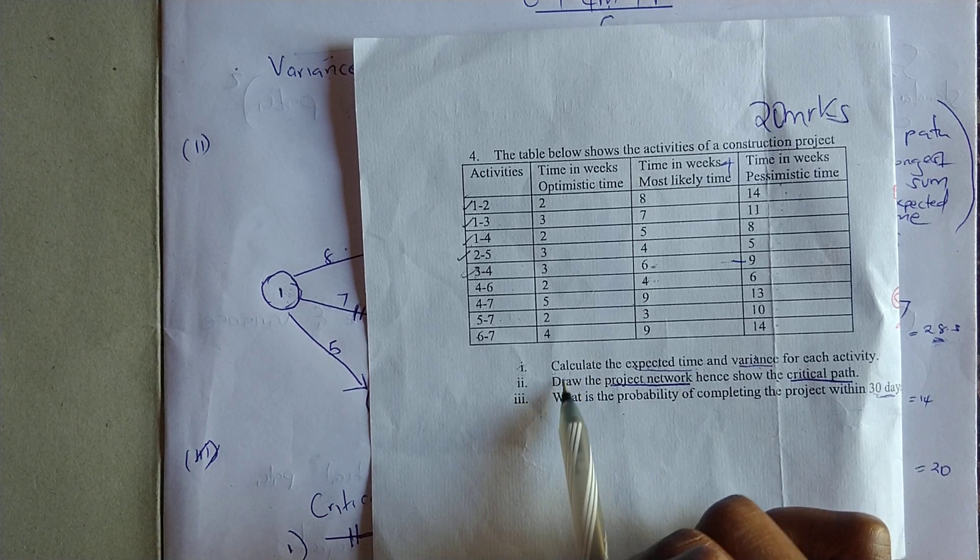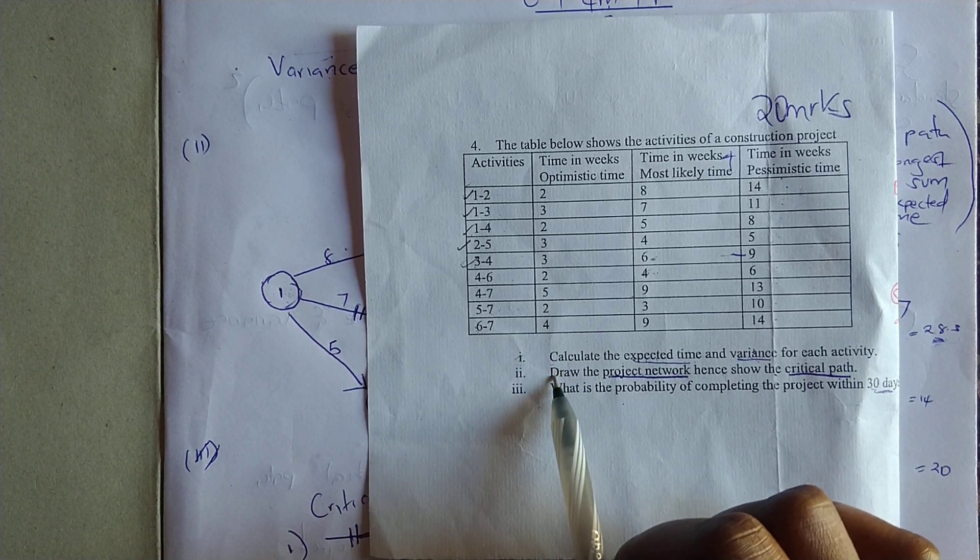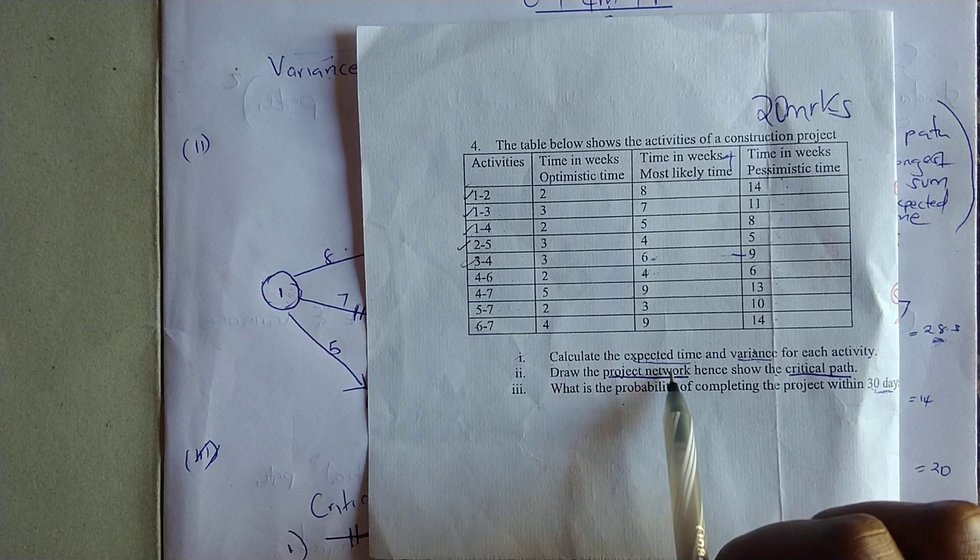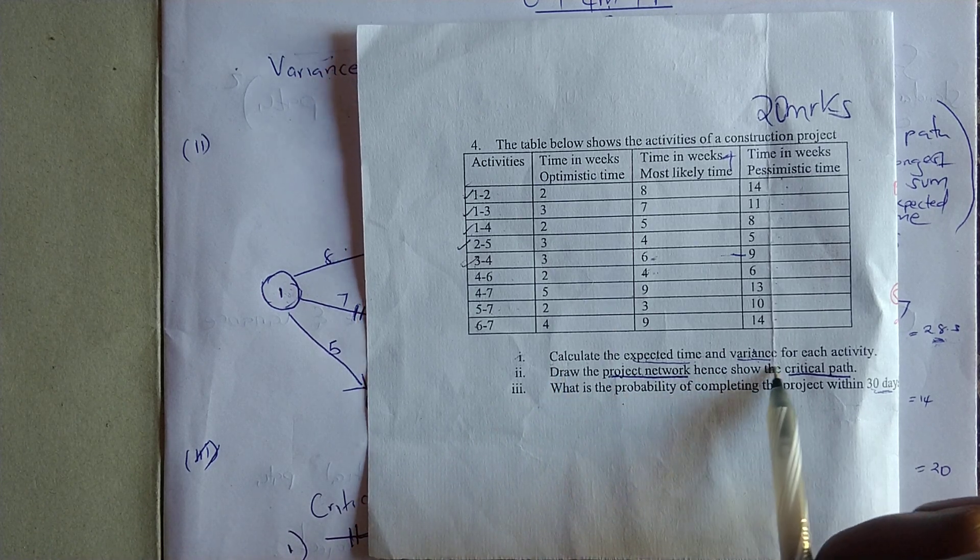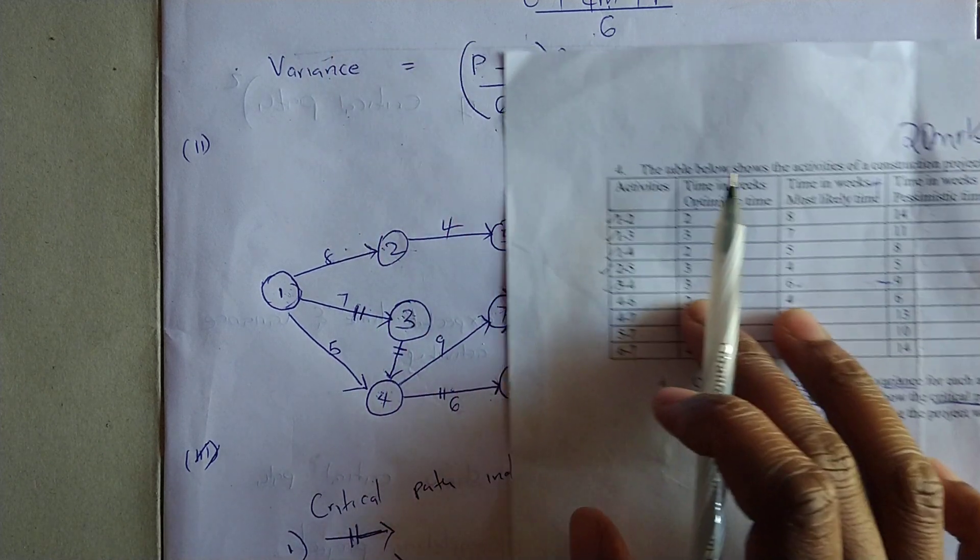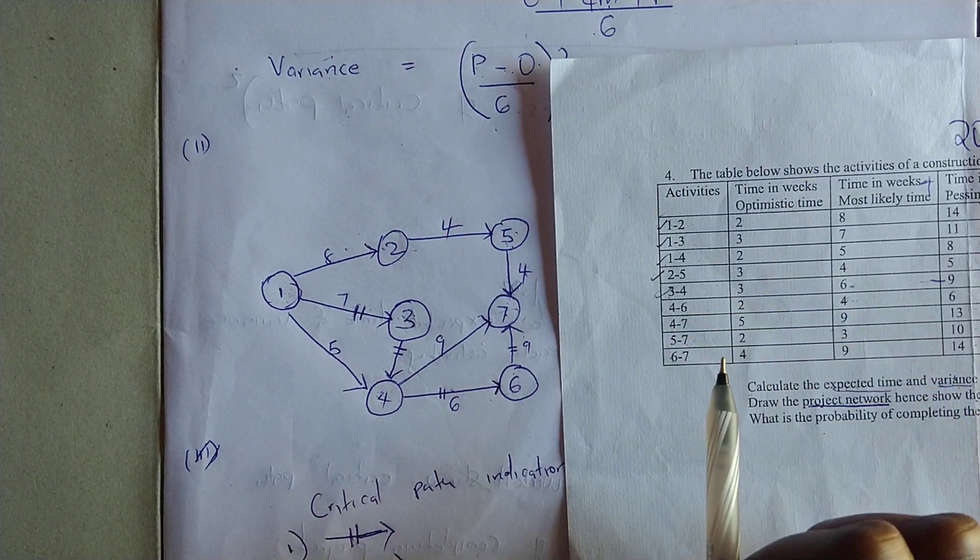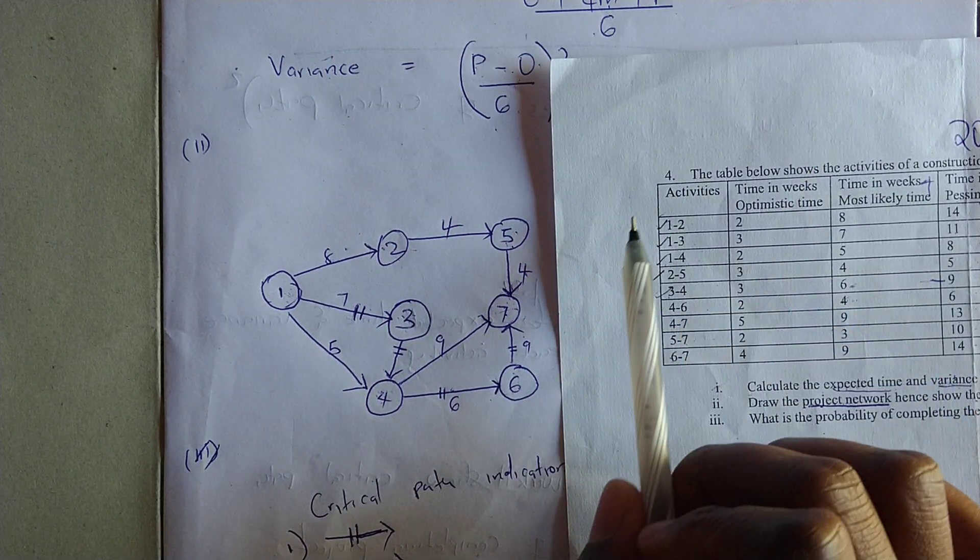This is a continuation from the previous question. In question two, draw the project network and show the critical path. By now you should have a clue on how to go about doing network diagrams.